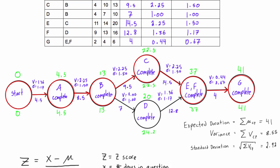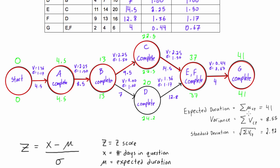We've been working on this for a couple of videos. What we learned from this network diagram is we were able to figure out the expected duration of the project was 41 days. It had a project variance of 8.55 and a standard deviation of 2.92.